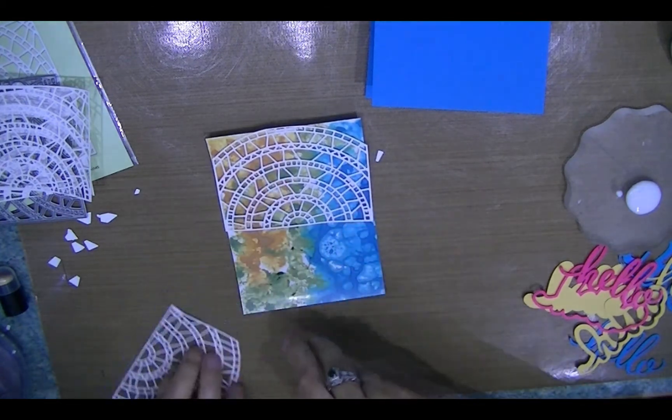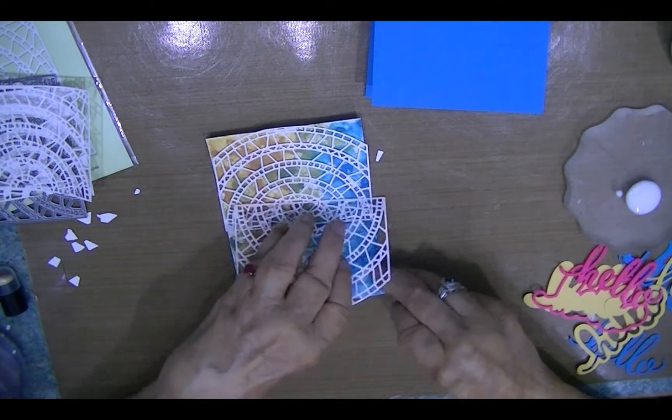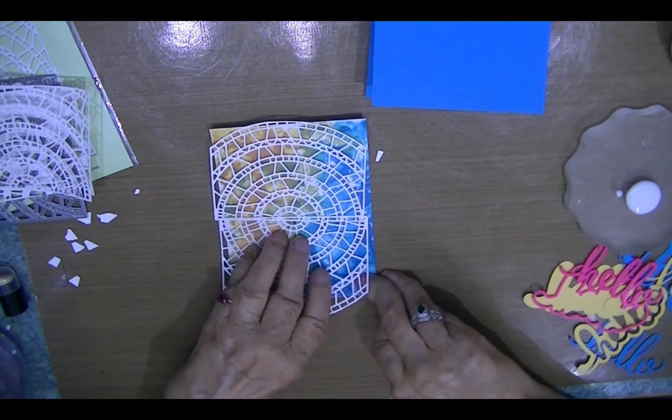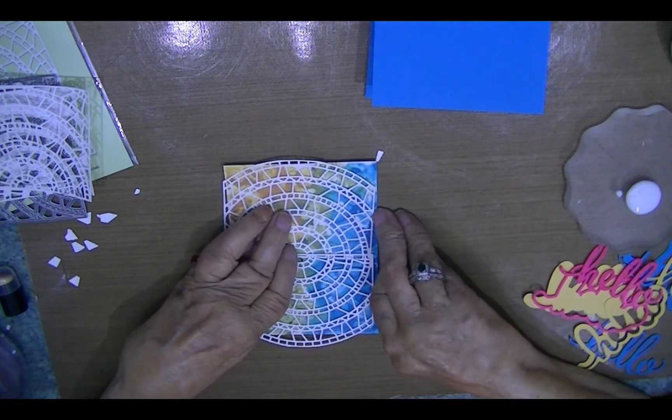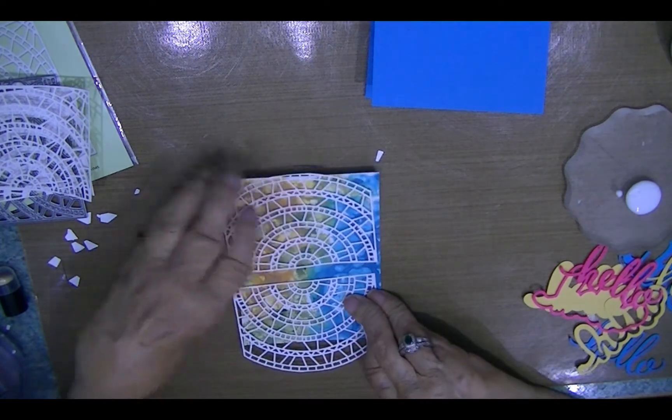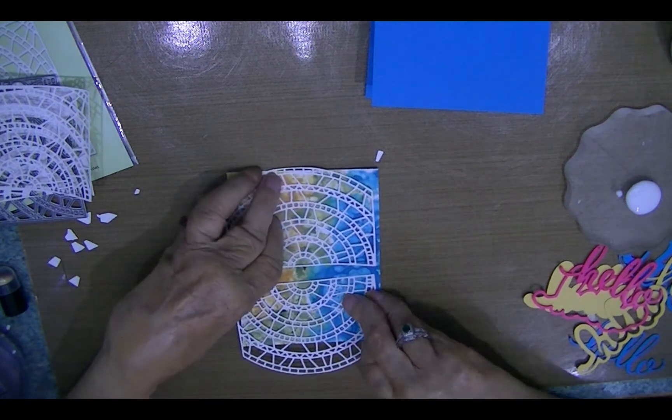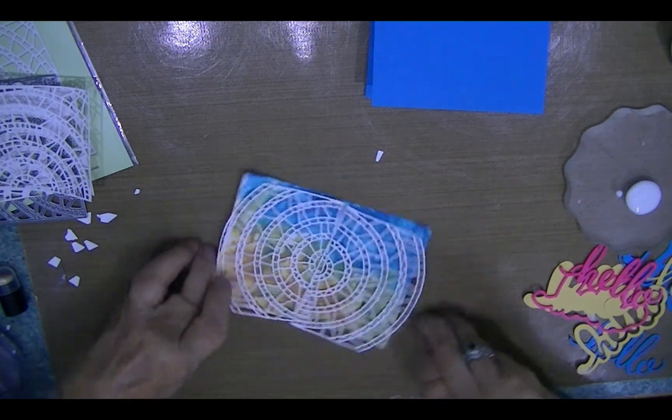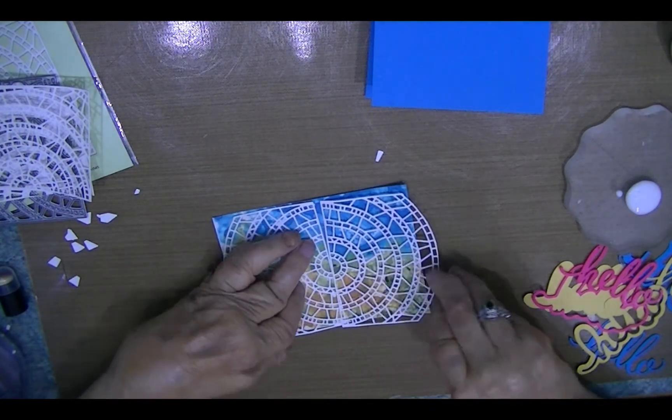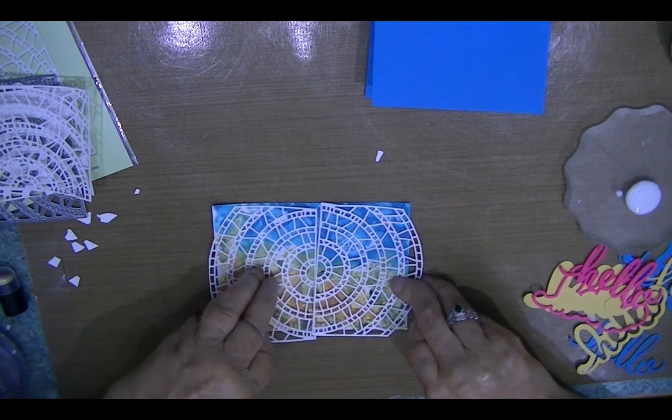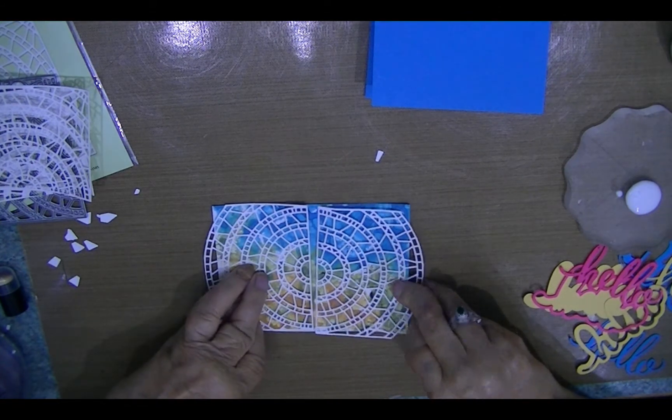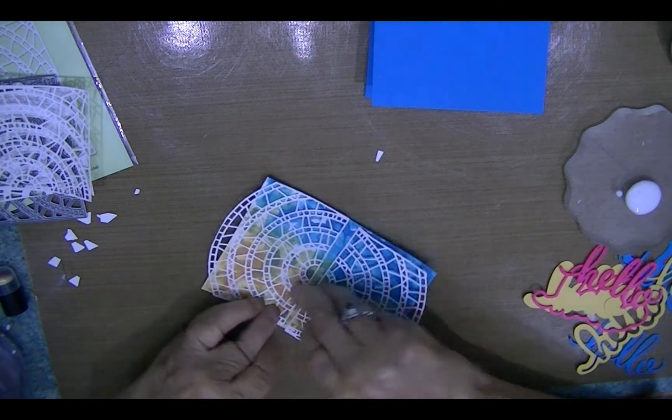I'm going to glue that down. I'm going to overlap this center and glue this one down. Now, I may need to figure out where center is here.